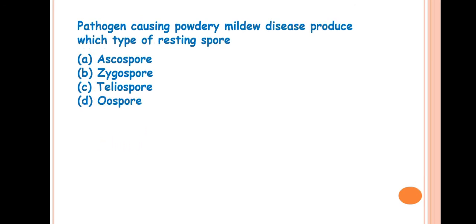Next question is, pathogen causing powdery mildew disease produces which type of resting spore? The answer is ascospore. Powdery mildew fungi, that is the Erysiphaceae family, produces the ascospore as resting spore or sexual spore, and the asexual spore is the conidia.